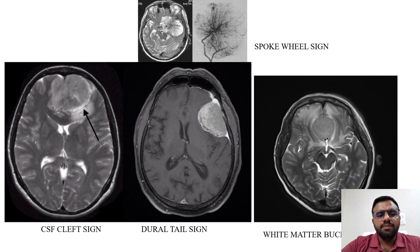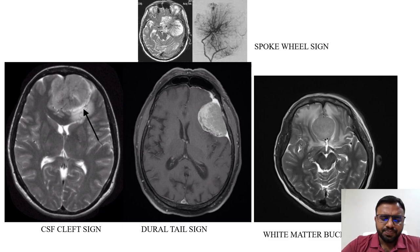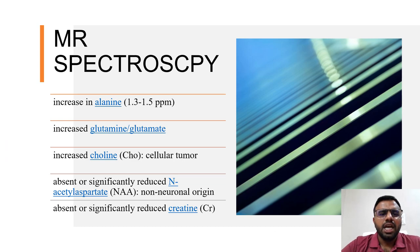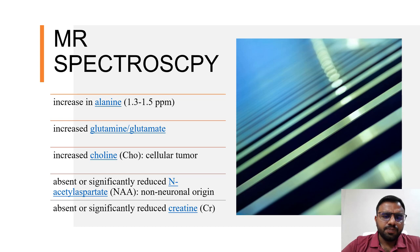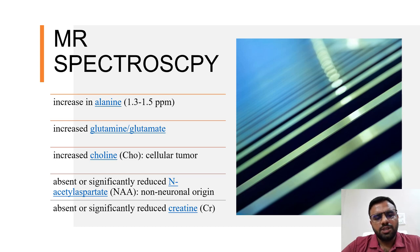On the images we see the spoke wheel sign, the CSF cleft sign, the dural tail sign, and the white matter buckling sign. MR spectroscopy findings in meningioma cases include: increased alanine, increased glutamate, increased choline, absent or significantly reduced N-acetyl aspartate (indicating non-neuronal origin), and absent or significantly reduced creatine.